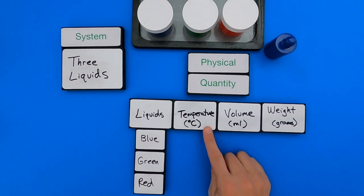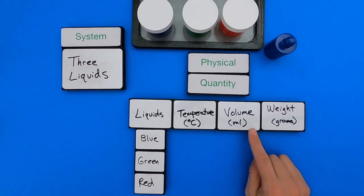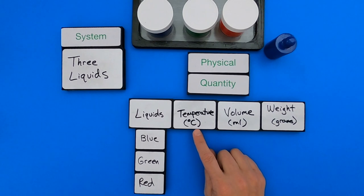Okay, so the three quantities I'm thinking about are the temperature, the volume in milliliters, temperature in degrees Celsius, and then weight in grams. And so I'm going to speed up the video a little bit, and you'll be able to see me measuring some of these quantities.